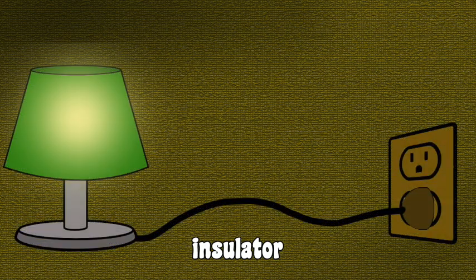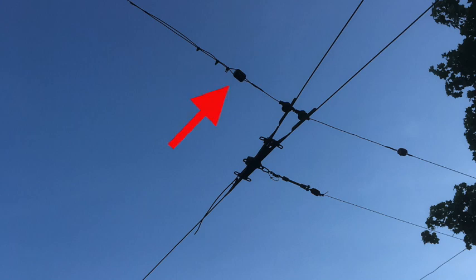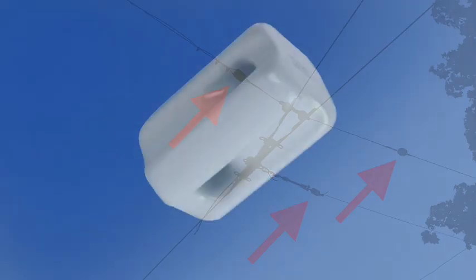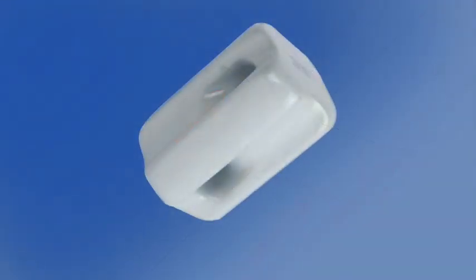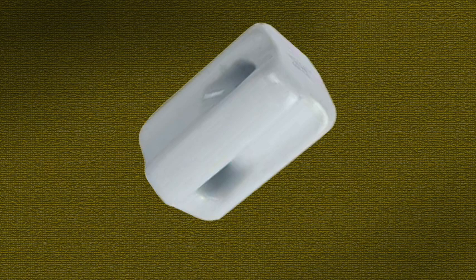Insulators are very useful. The plastic coating on wire prevents electricity from coming in contact with things it shouldn't, like your hand. If you look up at the trolley wire running overhead our streetcar lines, you'll see many insulators. They are made of glass, ceramic, or porcelain. These insulators prevent the electricity that powers our streetcars from short-circuiting or endangering people and animals below.